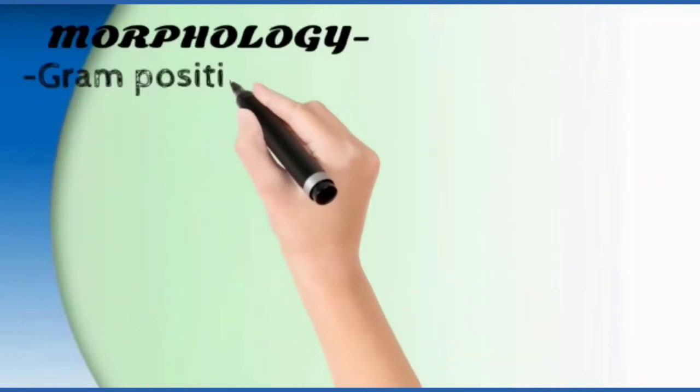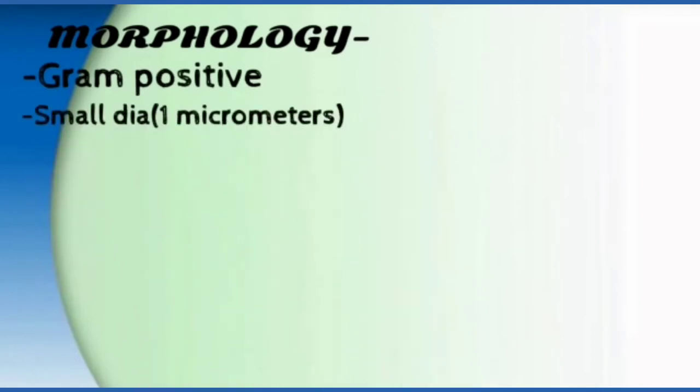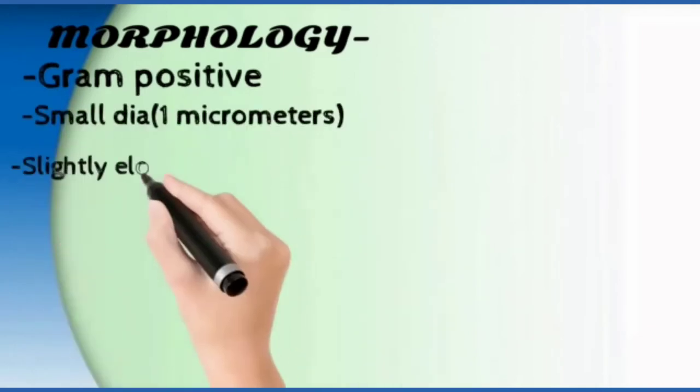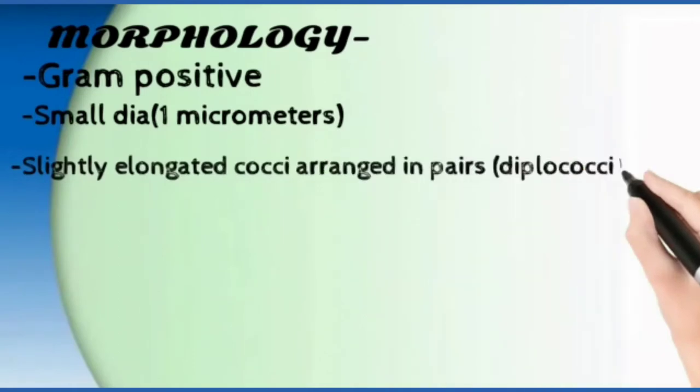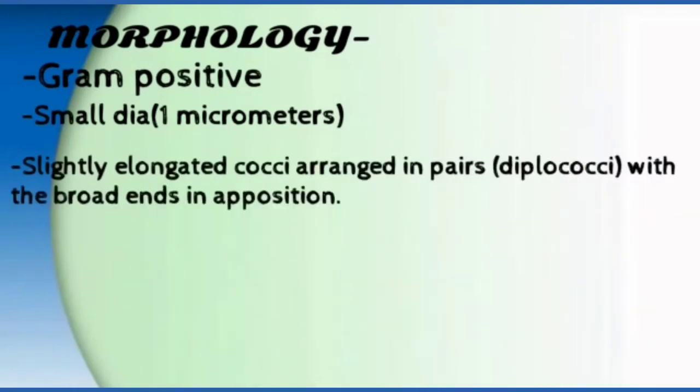Now we'll talk about its morphology. These are gram positive with a very small diameter of 1 micrometer. They are elongated cocci and always arranged in pairs.